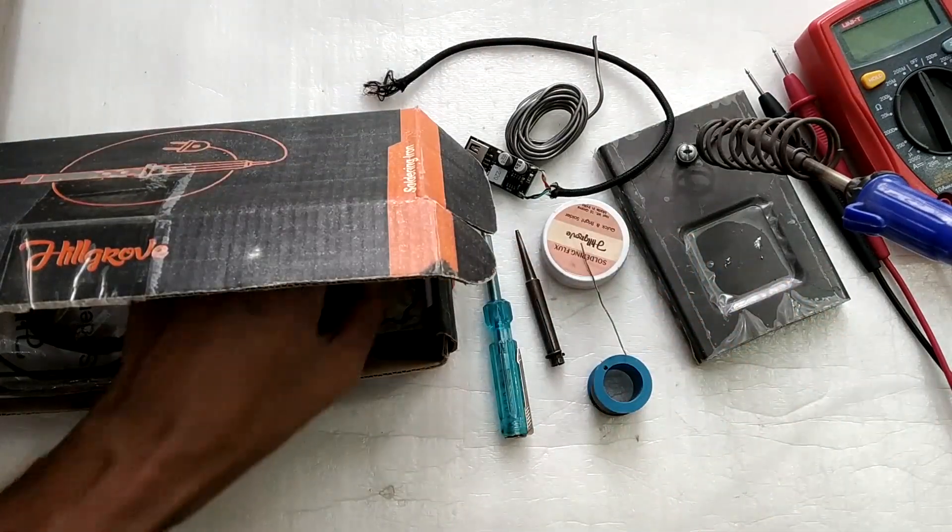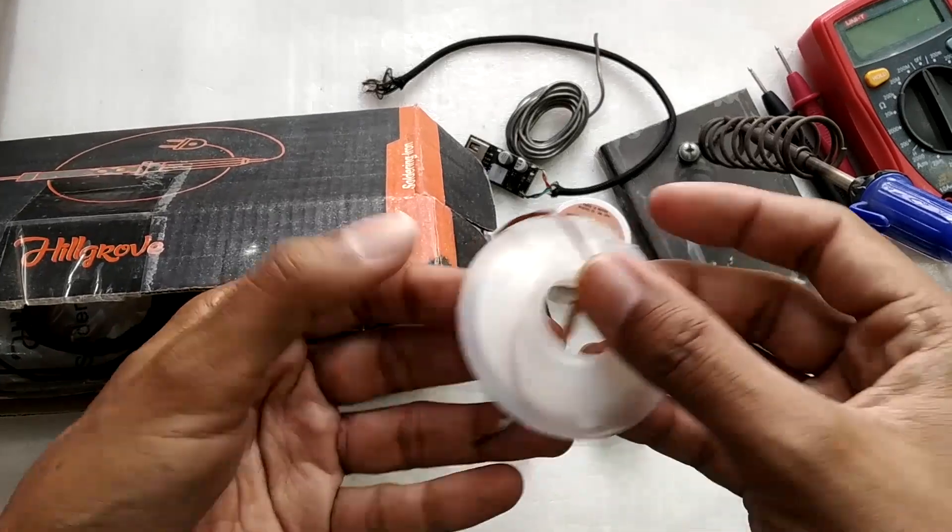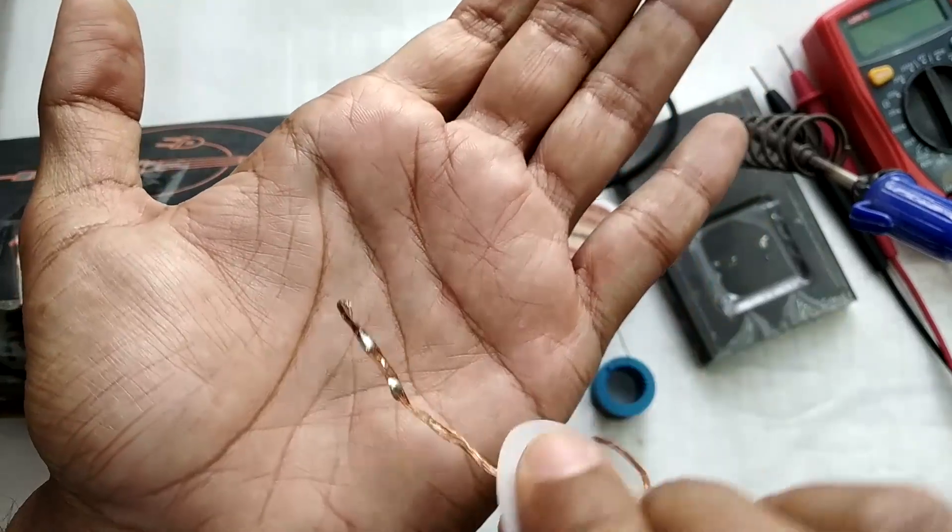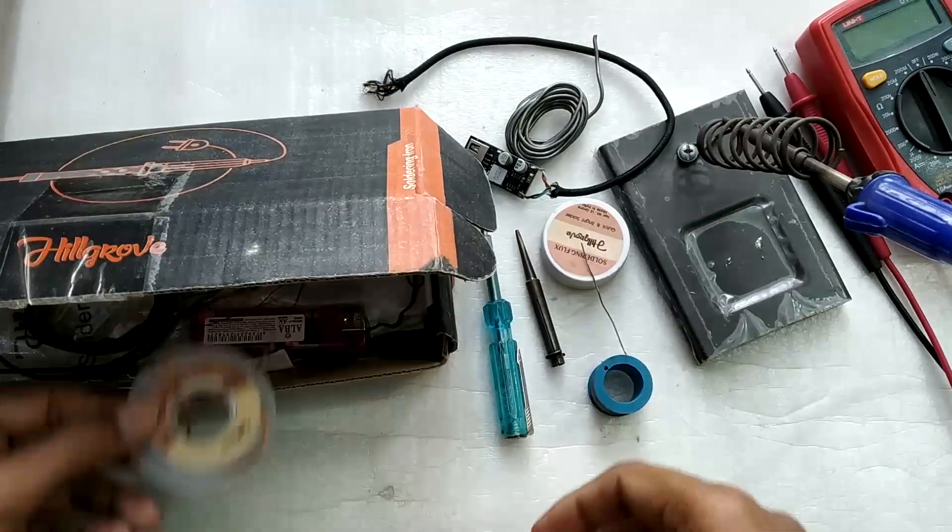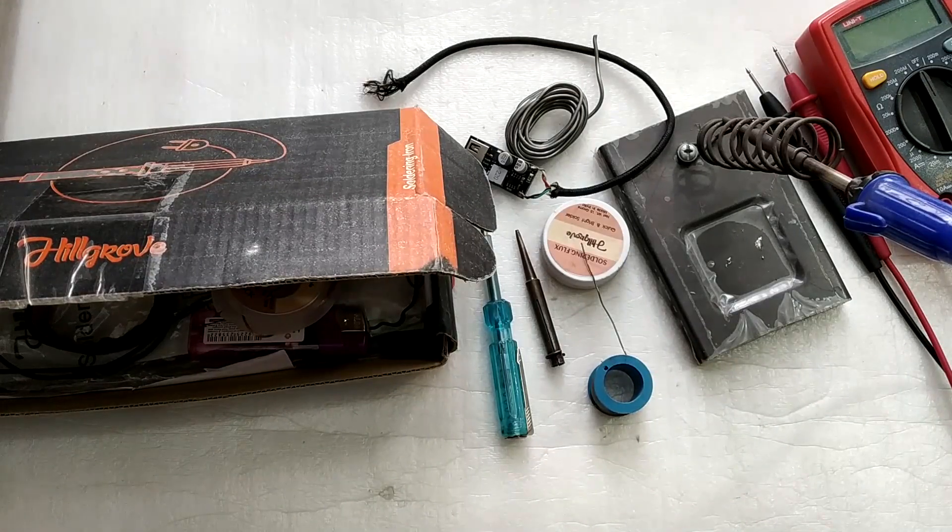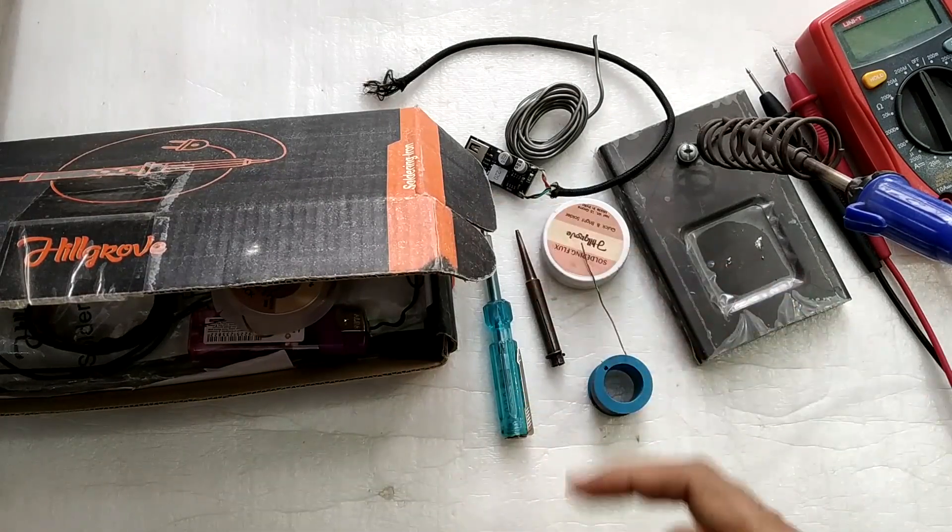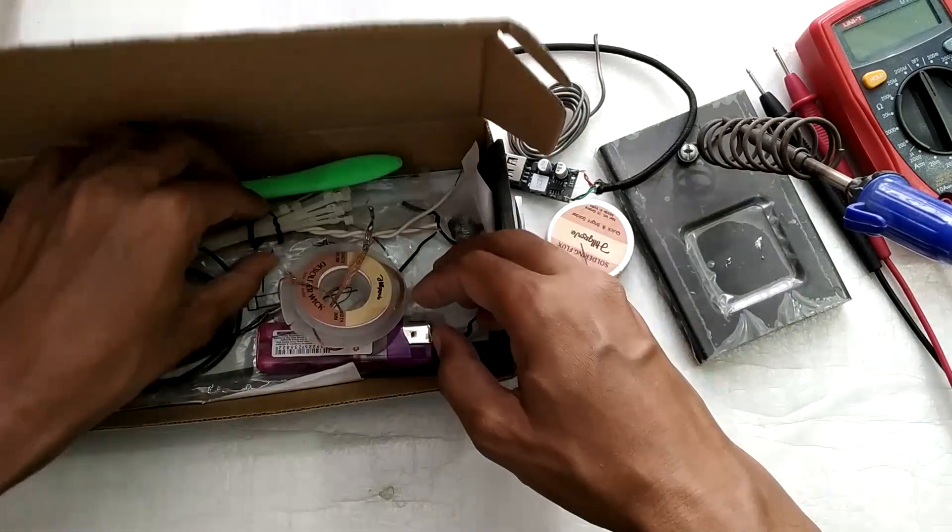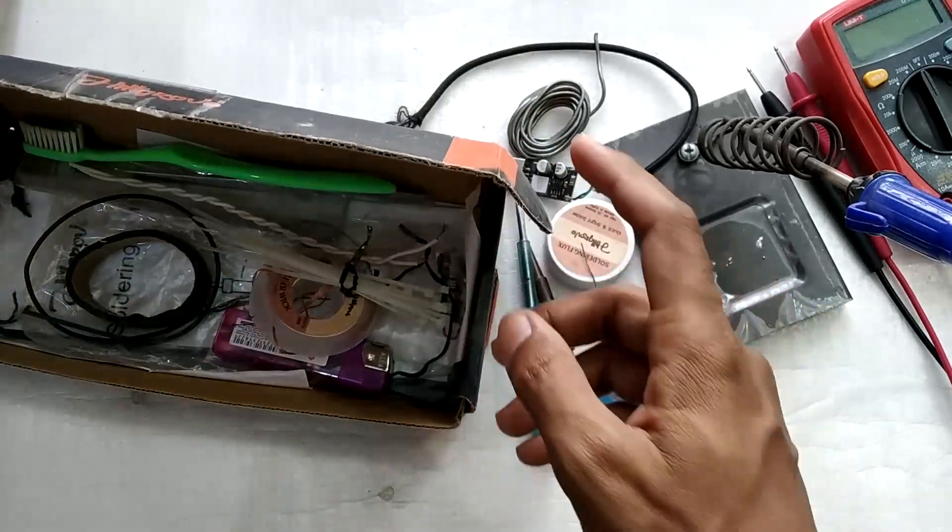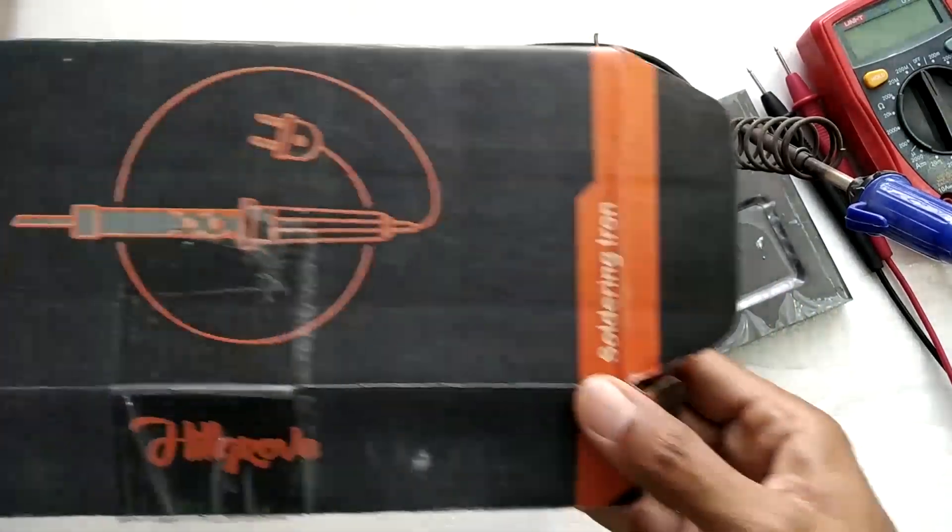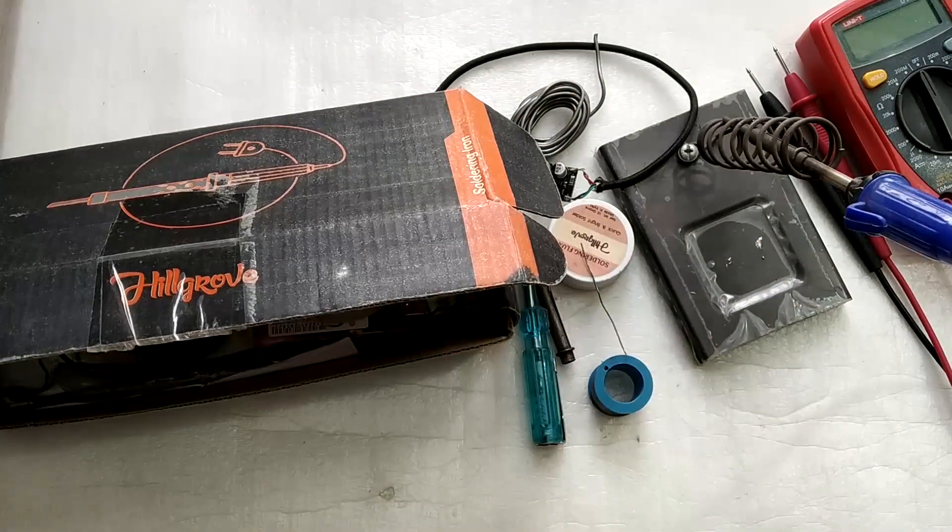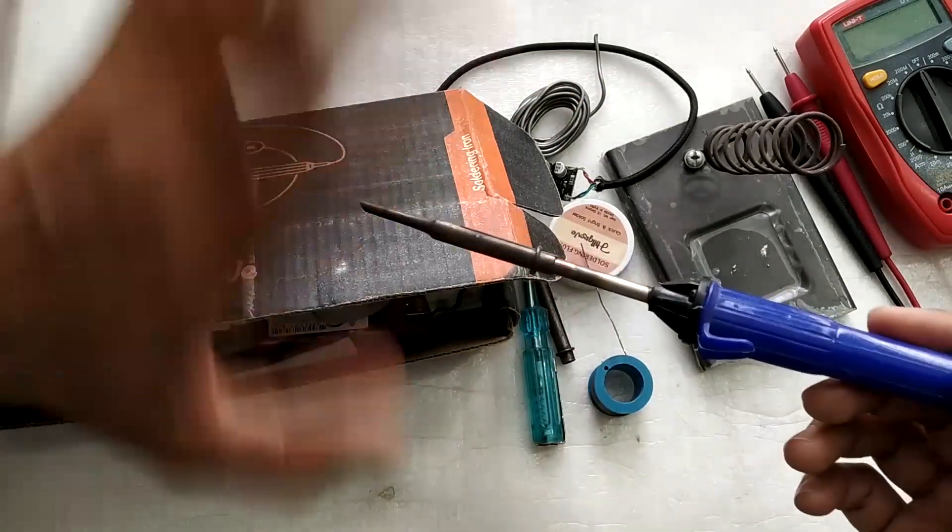Overall this is a decent soldering iron. The wick didn't work really well, I wasn't impressed with it. But for about 250 rupees when I bought it a year ago, it has lasted me really well. By the way, you don't get these zip ties and brush, I added those myself. This was my video on the cheapest soldering iron from Hillgrove. Thanks for watching and I'll see you in my next video, bye bye.